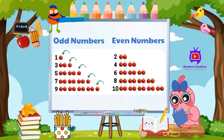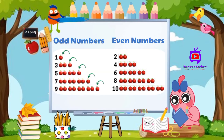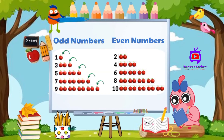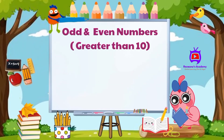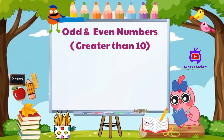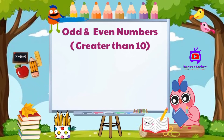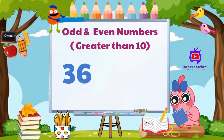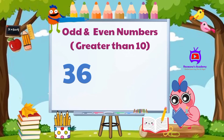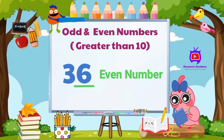We have seen how to identify if a number is odd or even for numbers one to ten. Now let us see for numbers greater than ten. To find if a number is even or odd, look at the last digit. For example, 36 — the digit at the end is six. Six is an even number, so 36 is an even number.